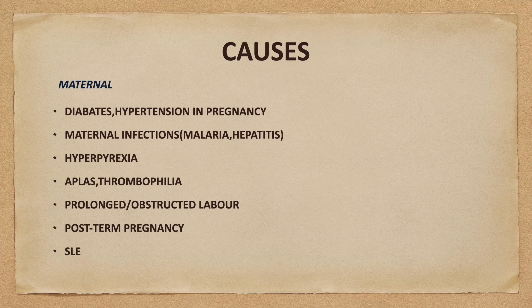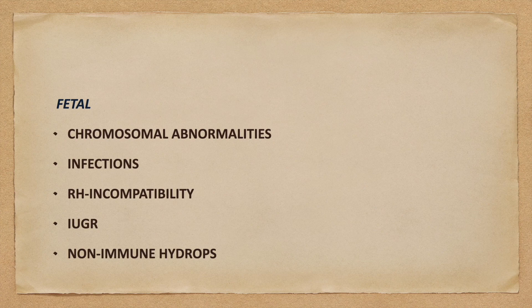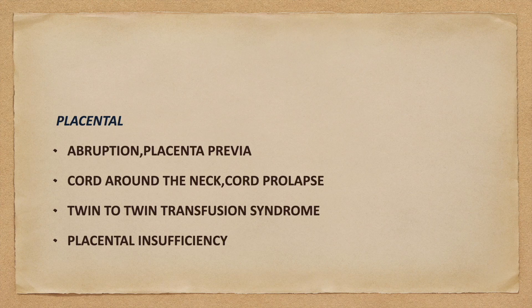Post-term pregnancy and autoimmune disorders like systemic lupus erythematosus. Fetal causes like chromosomal abnormalities, infections, RH incompatibility, IUGR and non-immune hydrops. Placental causes like abruption, placenta previa, cord around the neck, cord prolapse, twin-to-twin transfusion syndrome and placental insufficiency.